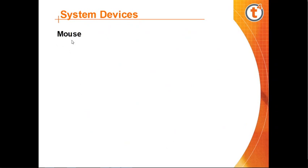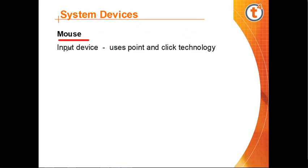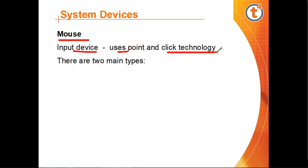Next is the mouse, which is also an input device that uses point-and-click technology. A computer mouse is a handheld pointer device that detects two-dimensional motion relative to a surface. This motion is typically translated into the movement of a pointer on a display, allowing smooth control of the graphical user interface of a computer.